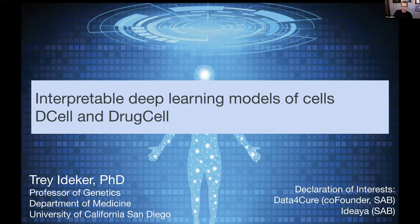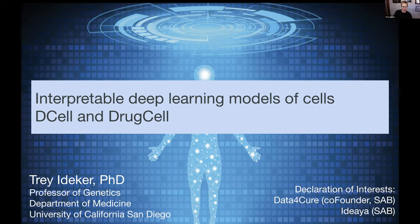I'm going to talk about two different models we've developed over the past couple of years. The first was called D-Cell, and most recently, last month, we published something called DrugCell, which attempt to entrain the inner workings of a deep neural network to cell biology and then apply that model in different ways. The key point is that when you have not a black box, but a model whose inner workings respect what we know about cell biology, it's much more interpretable.